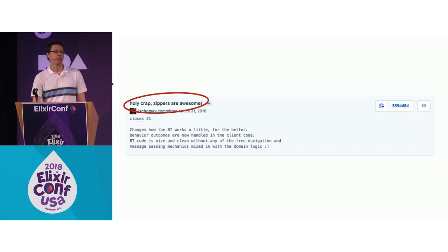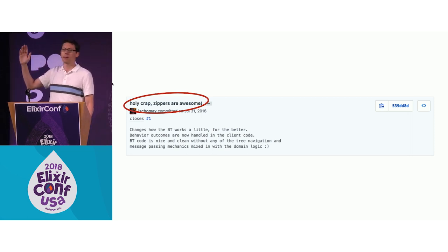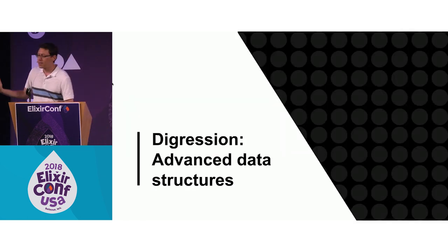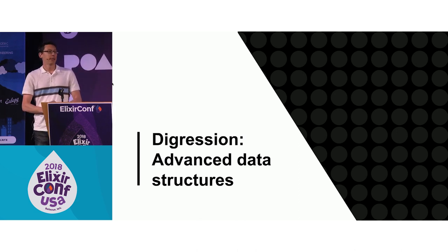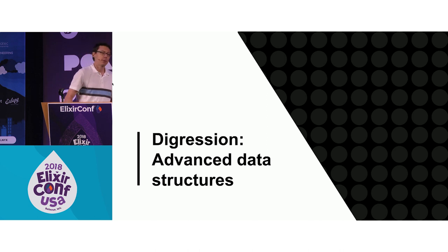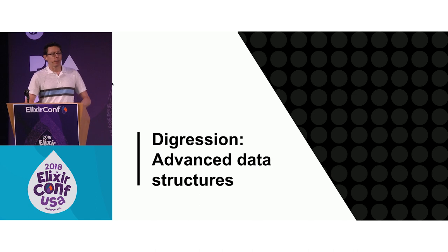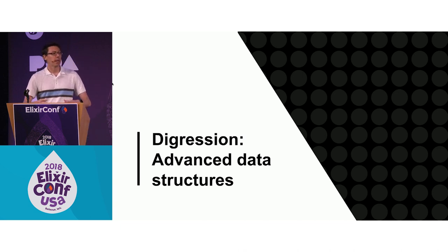And then I learned about zipper trees. When I say advanced data structures, I mean something that's built for a specific purpose that relies on primitives like lists and trees, and the important part is it gets its functionality not from code and logic, but rather from the shape and structure of its data.